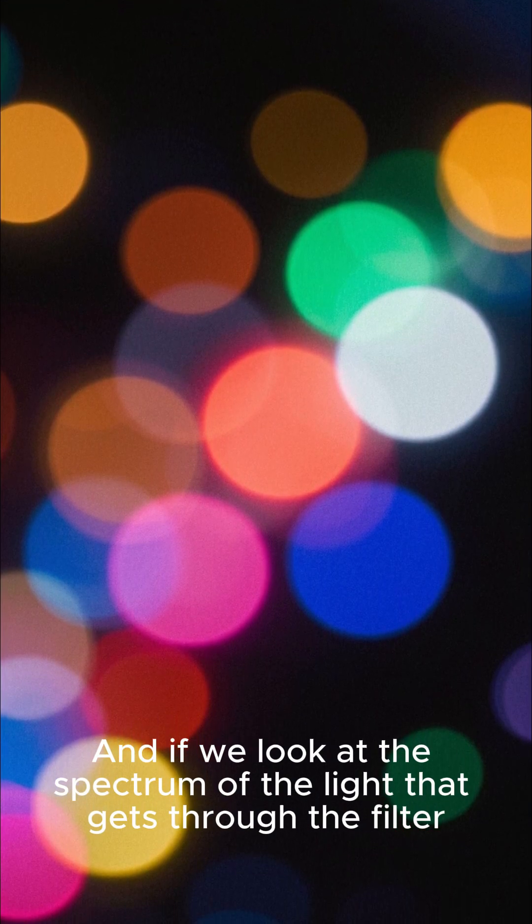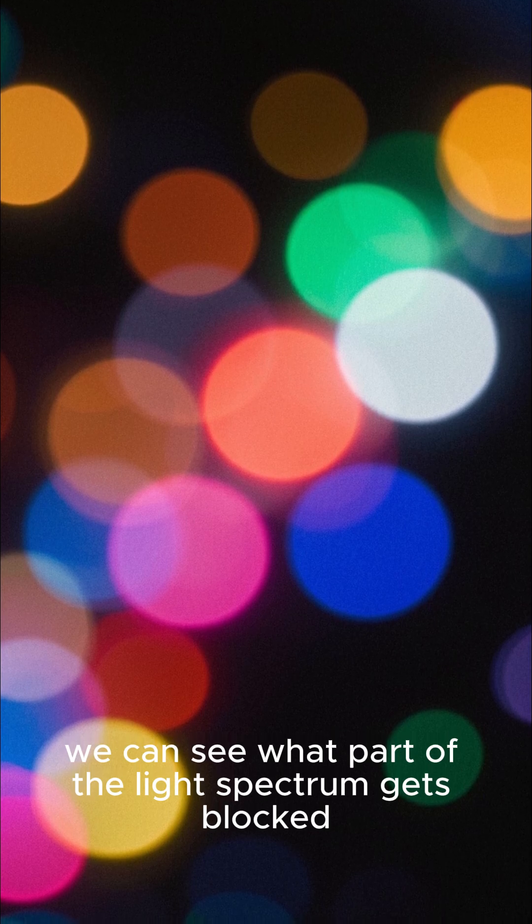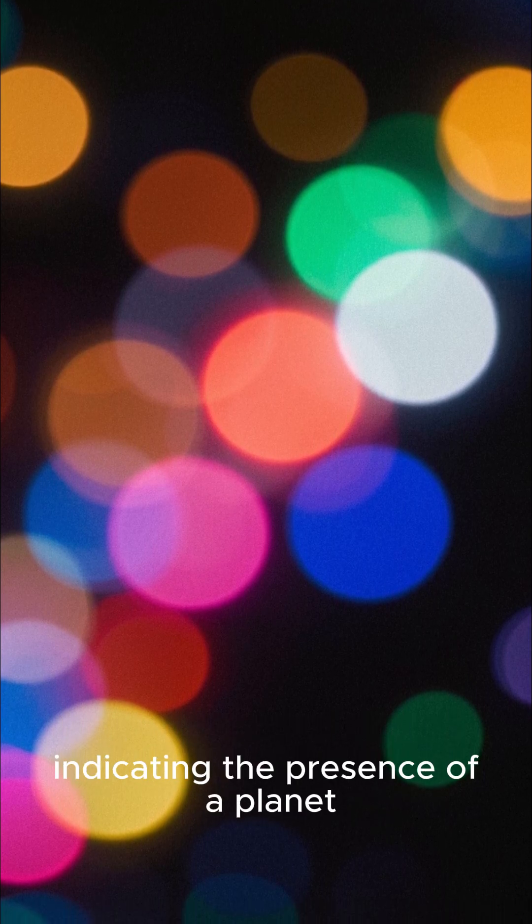And if we look at the spectrum of the light that gets through the filter, we can see what part of the light's spectrum gets blocked, indicating the presence of a planet.